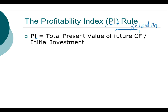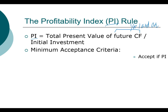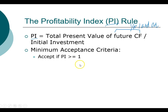Do not include your year-zero cash flow when computing the present value of future cash flows. The profitability index is a ratio where the numerator represents the value and the denominator represents the cost. If you are evaluating independent projects, you want this ratio to be greater than one, meaning the value you're creating is greater than the cost. This is very similar to the NPV rule, except NPV is a difference while PI is a ratio.